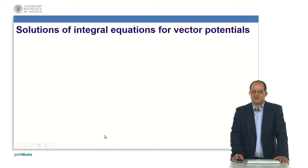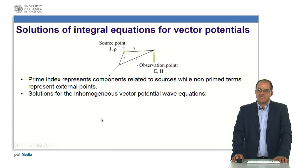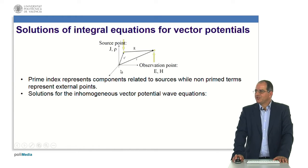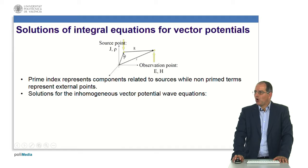The first thing we have to do is to define the problem we want to aim at. This problem is devoted to wire antennas, so it will be devoted to a source point where I will have a current density given by J and a current source given by rho. It's important to note that all source points will be denoted by a prime index, so the vector position of this source point will be denoted by r prime.